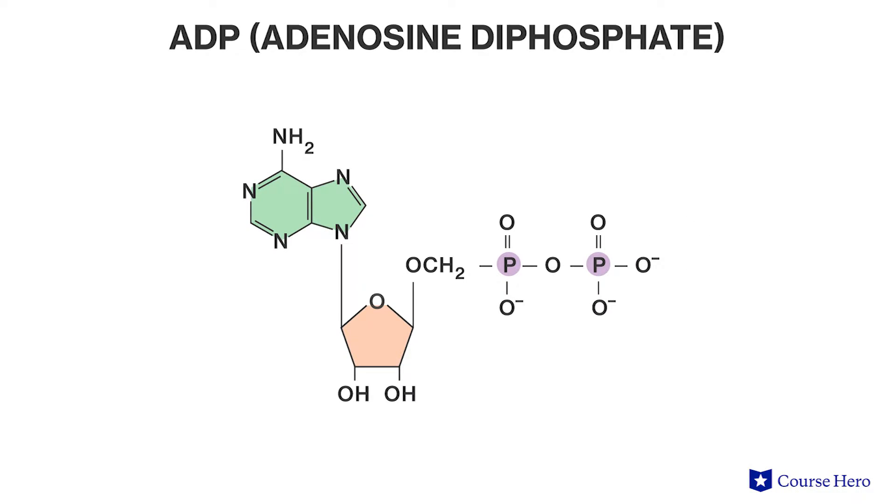ATP contains chemical energy in the bonds of its phosphate groups, so that when a bond is broken and a phosphate ion is released from ATP, energy is released along with it. The molecule that remains is adenosine diphosphate, or ADP. ADP can then be rephosphorylated by cellular respiration to form ATP. The molecules of ATP and ADP cycle within cells, donating and receiving phosphate ions as they move between exergonic and endergonic reactions.